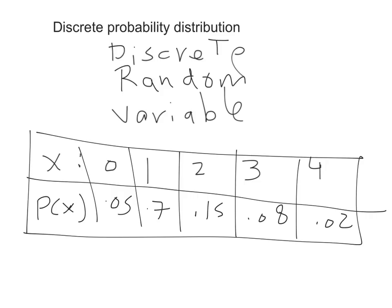Now I have the probability for each value, covering all possible values from 0 to 4. This table is called a discrete probability distribution — you have the probability for every value laid out in a table, just like a frequency distribution has a frequency for every class. My discrete random variable is X, and in this case X represents the number of mobile phones a student has.